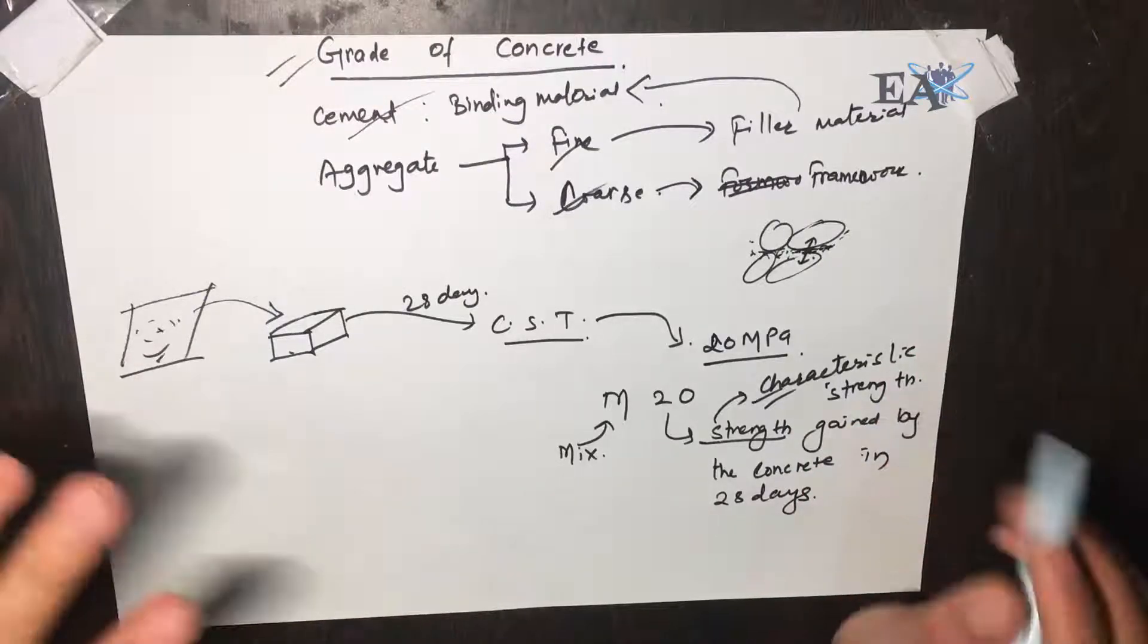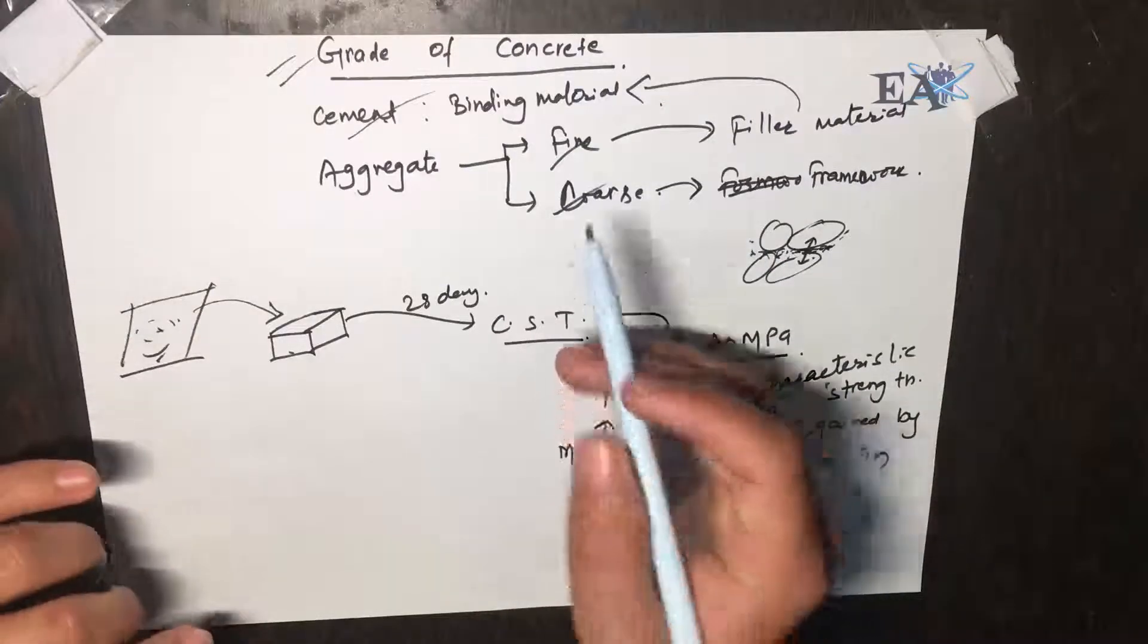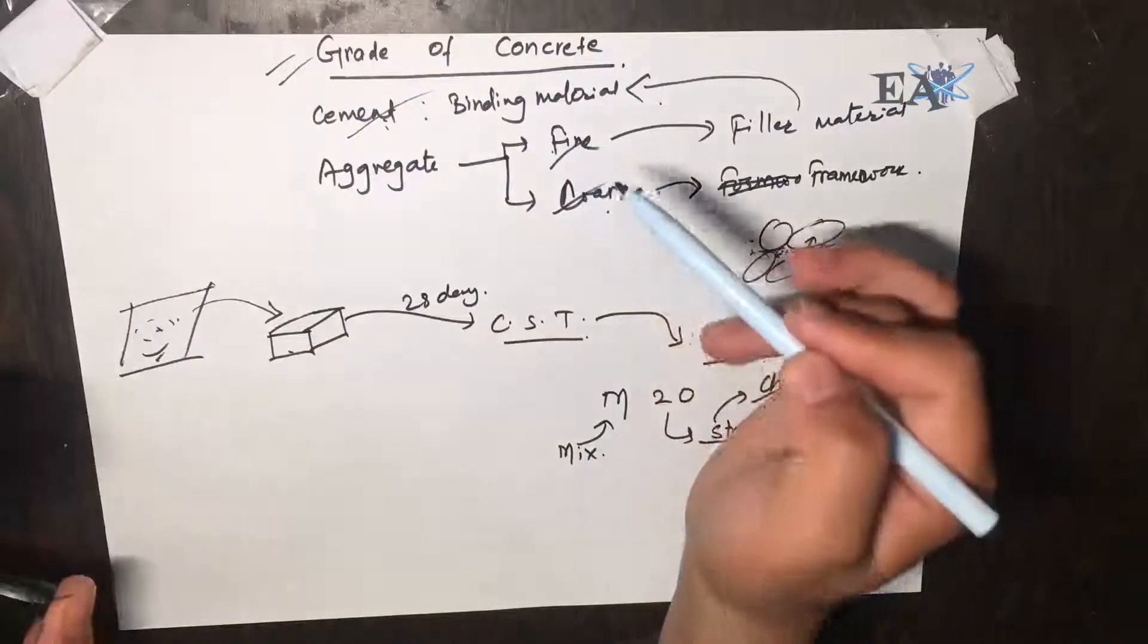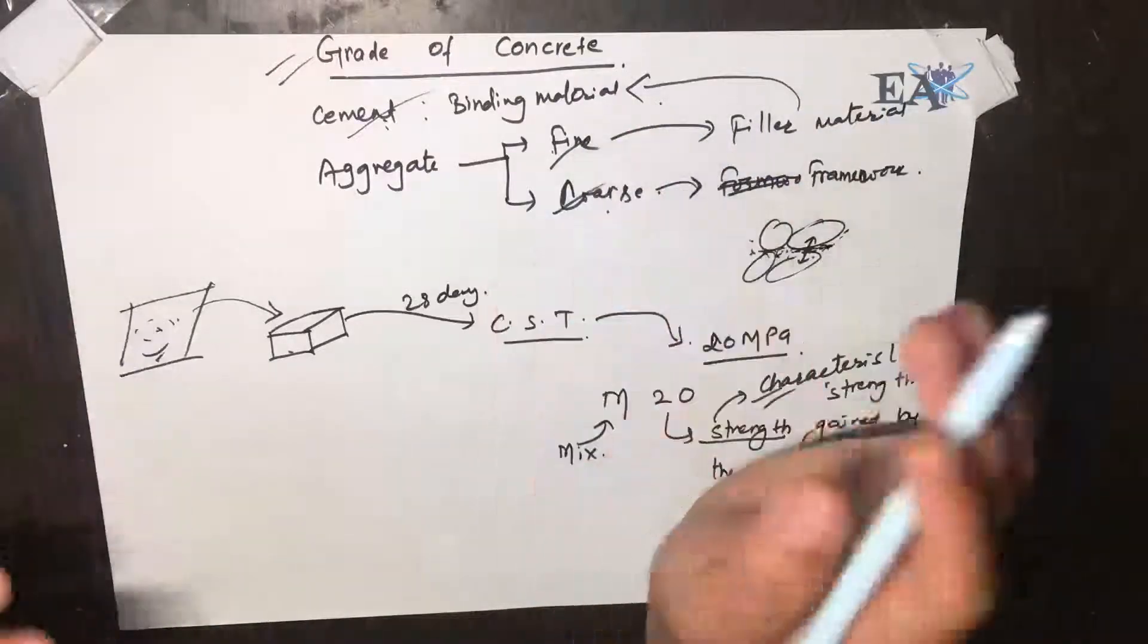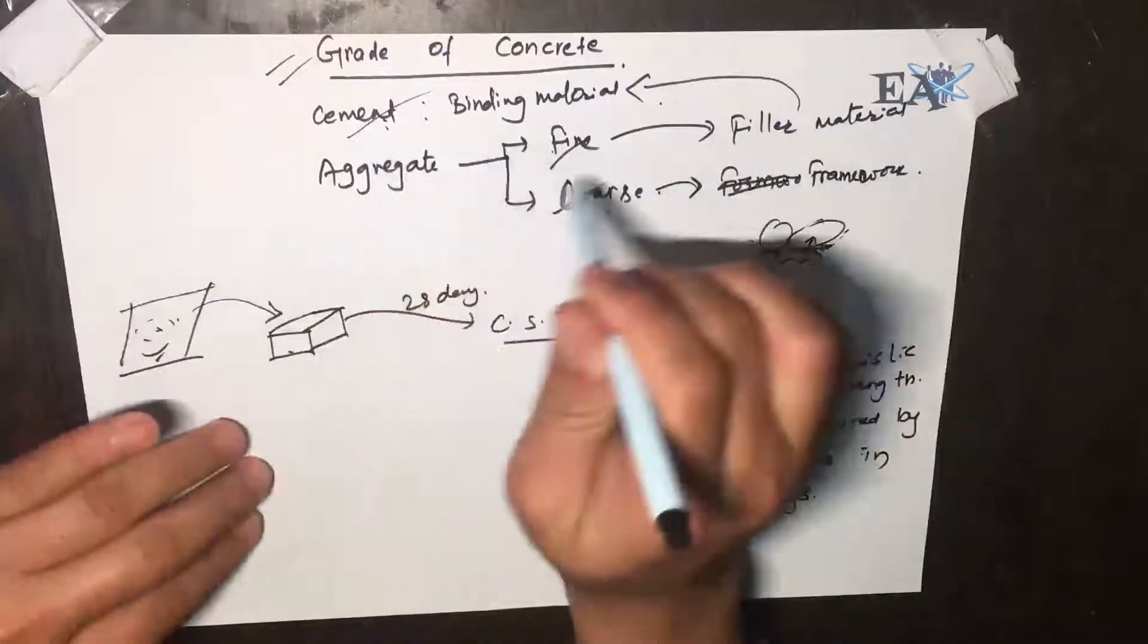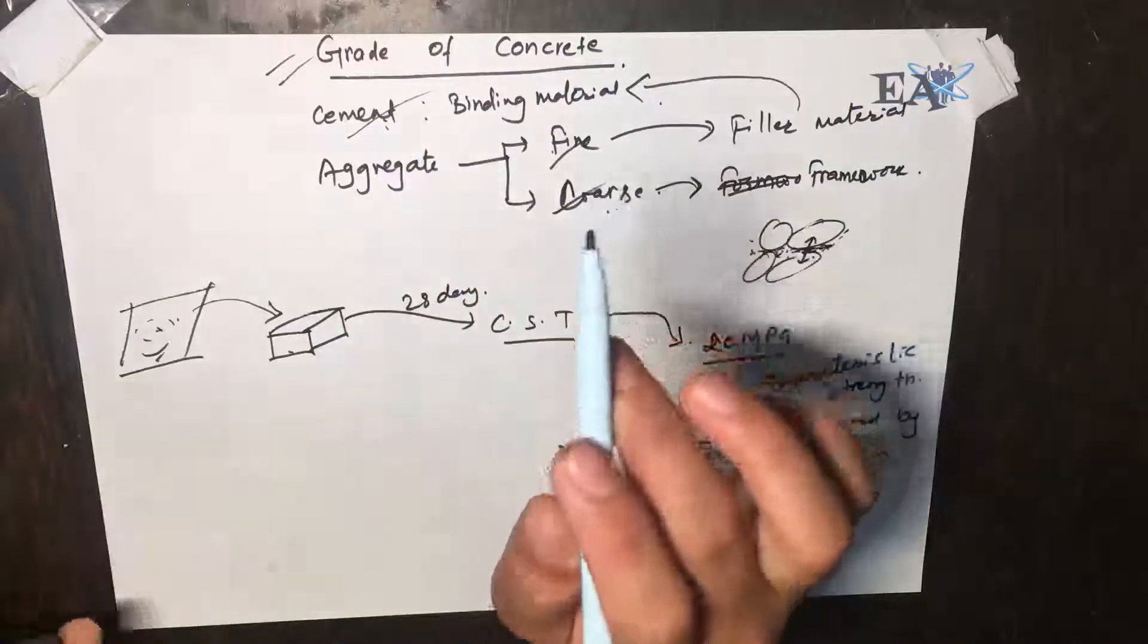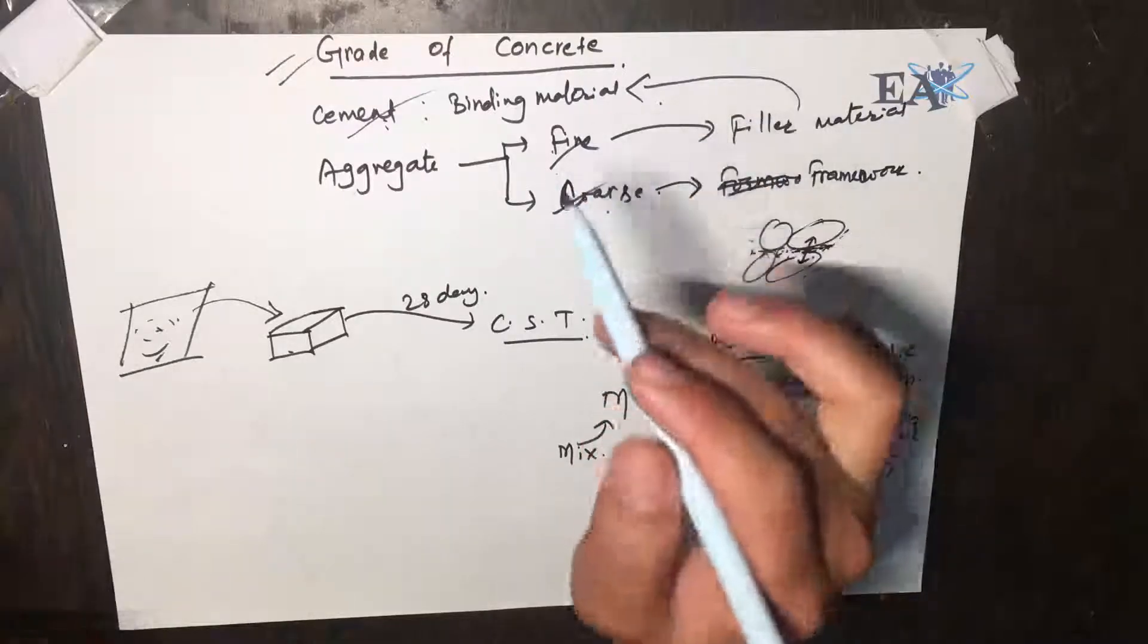The strength of any concrete depends largely on the ratio or the proportion of these three materials. If you change the proportion of fine aggregate and coarse aggregate, the strength changes accordingly. It also depends on other factors like curing and water-cement ratio, but for now let us focus on these three things only. If we change the ratio or the proportion of these three things, the concrete strength or compressive strength changes accordingly. Due to this reason